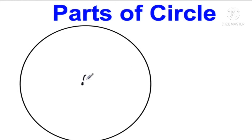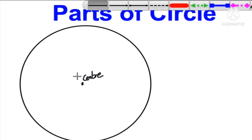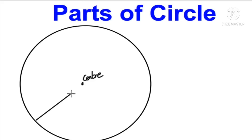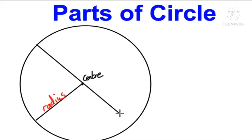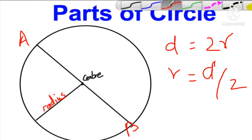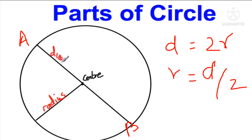First, let's understand what a circle is and what its parts are. Definition of circle: A circle is a simple closed curve all of whose points are at a constant distance from a fixed point in the same plane. The fixed point is called the center of the circle, and the constant distance is called the radius. A line segment joining the center with any point on the circle is called a radius of that circle.